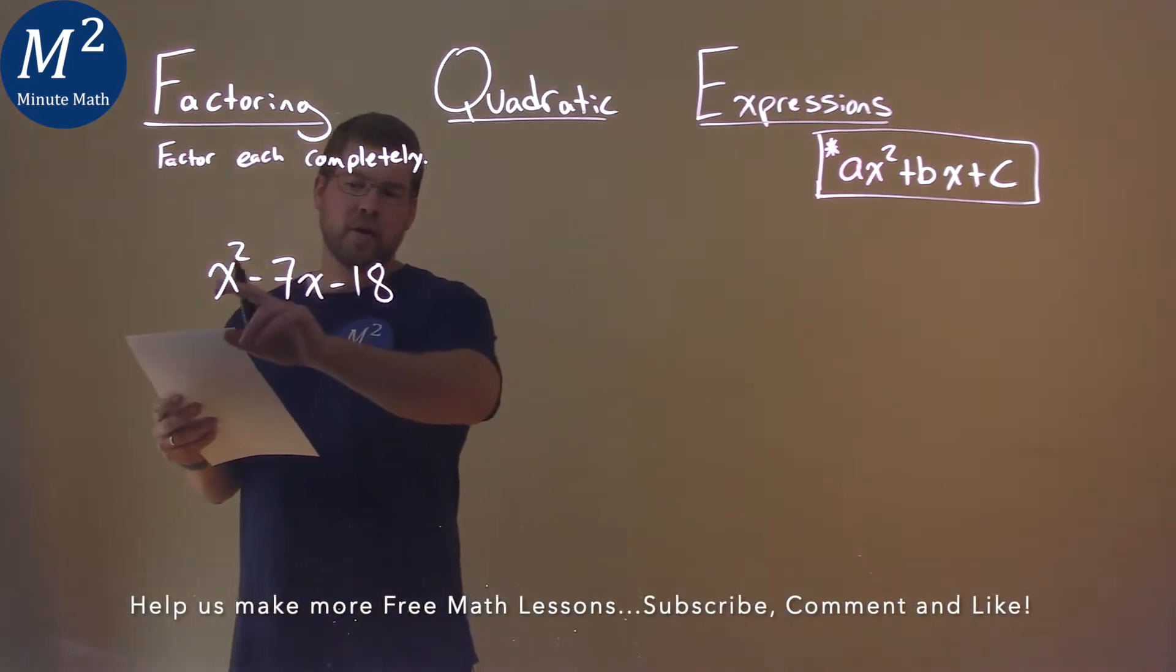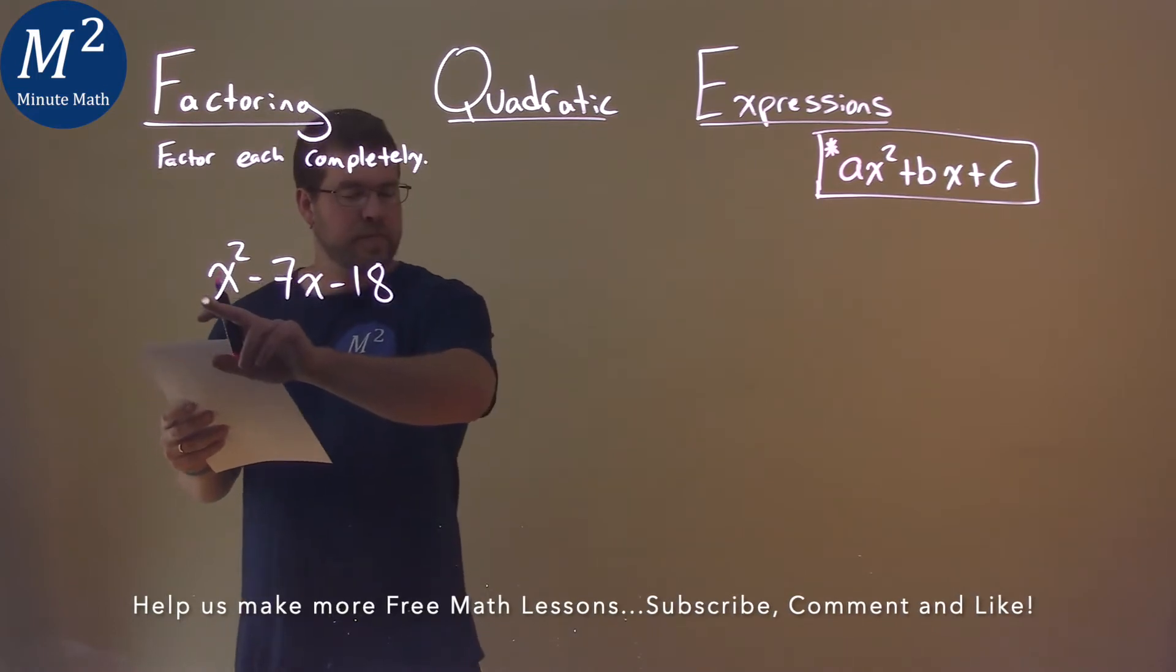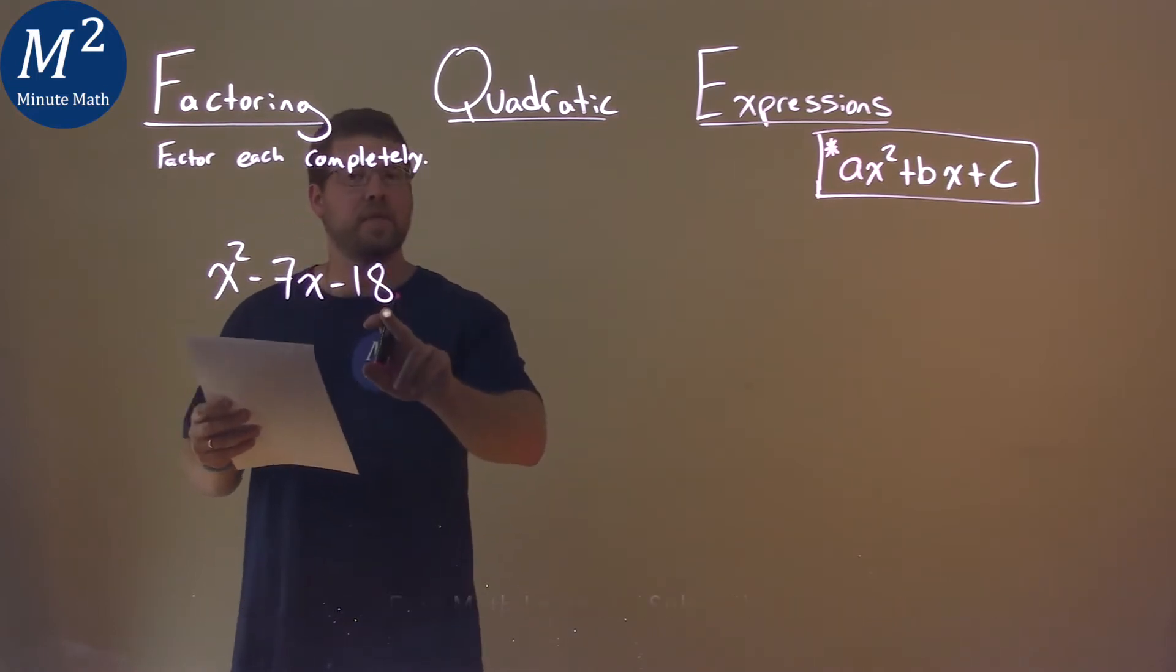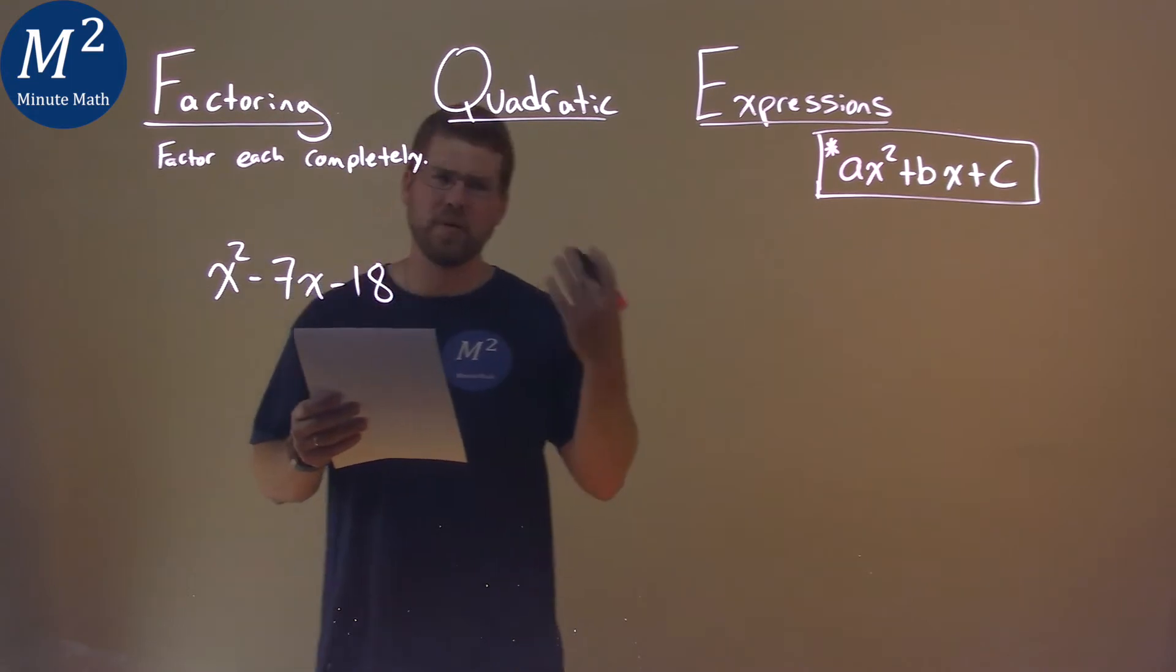We first are looking at our a value, which we know is 1. So then we just have to look now at the c value, which is 18, or negative 18.